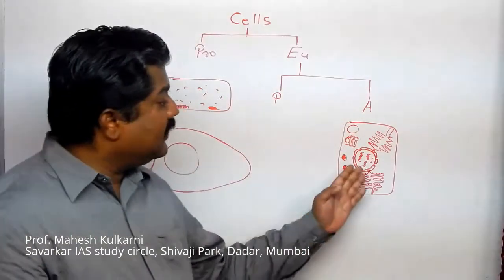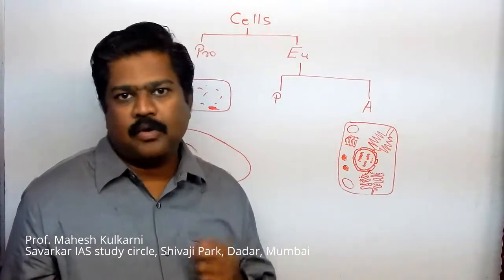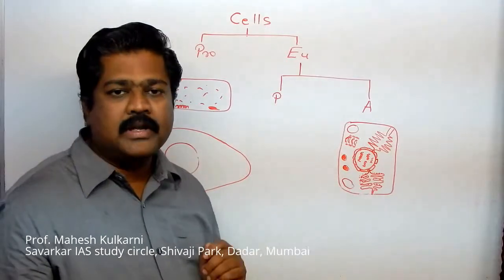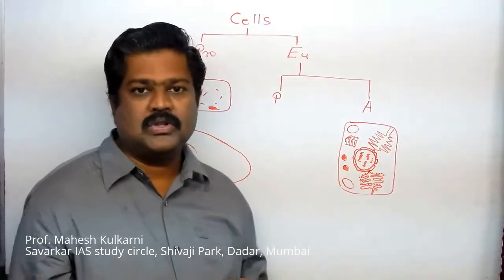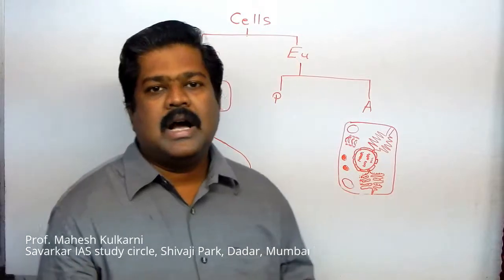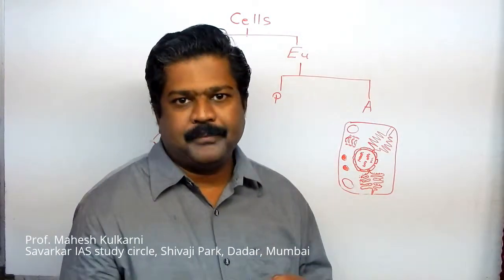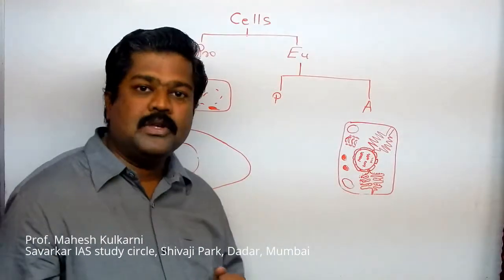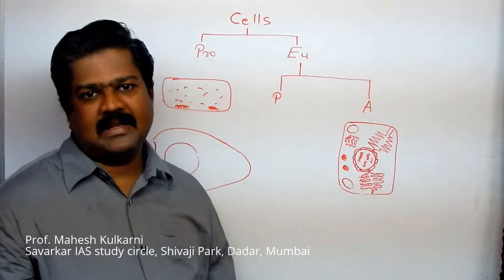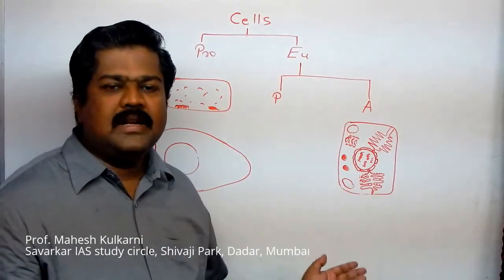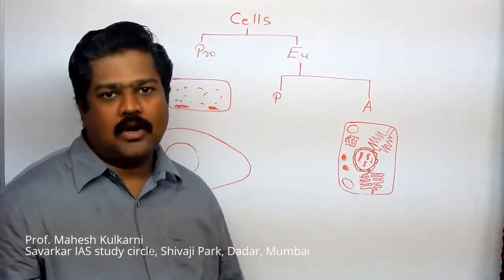Various substances we add so that certain parts of the cell become visible — we call them stains. Tincture iodine is one important stain we use to observe the nucleus. If you want to observe chromosomes, chromosomes absorb a stain called acetocarmine, so with the help of acetocarmine we can observe chromosomes. Eosin is another name of a stain. Various stains are used and various parts are then observed.